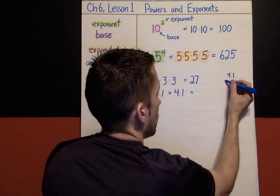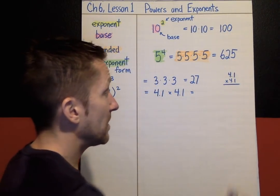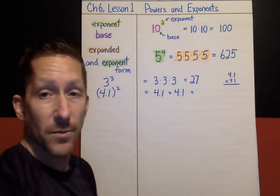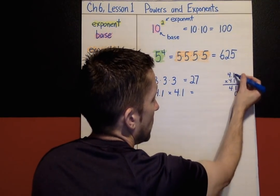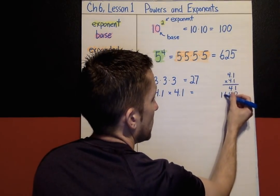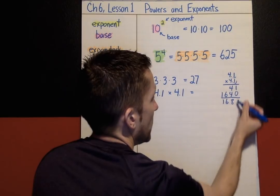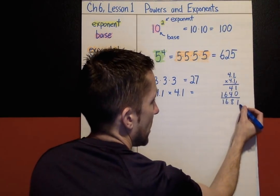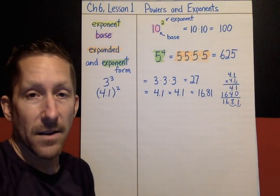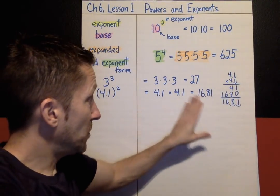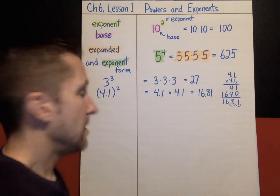I'm going to go solve 4.1 times 4.1. This is review from a previous lesson — ignore the decimals and multiply like it's 41 times 41: 1 times 1 is 1, 1 times 4 is 4, 0 placeholder, 4 times 1 is 4, 4 times 4 is 16. Adding gives 1, 8, 6, 1. I have 2 decimal places total, so I need 2 jumps in my answer. The answer is 16.81. So again, be careful — don't do too much in your head. Write it out, use expanded form, and make sure you're solving them correctly.